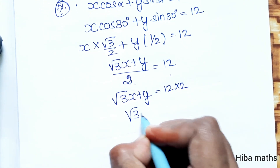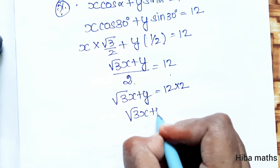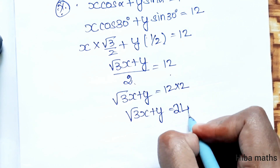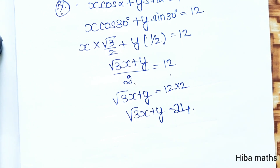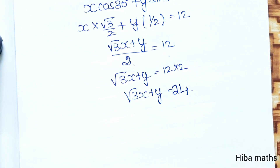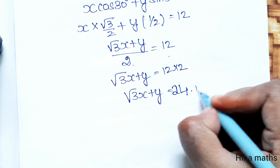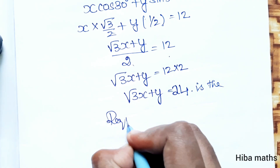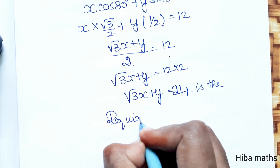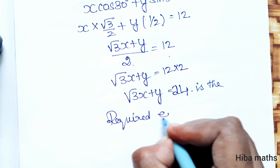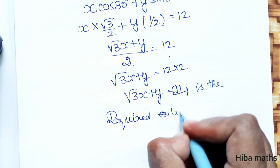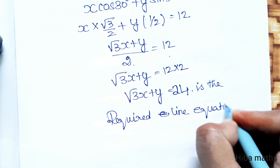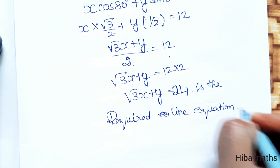So, √3x + y = 24. That is the required line equation. Thank you so much for watching.